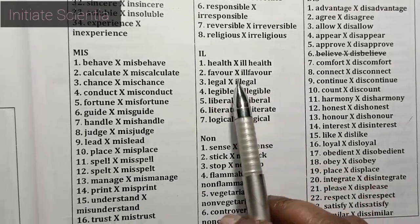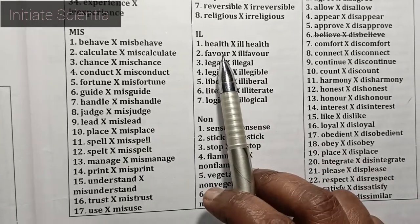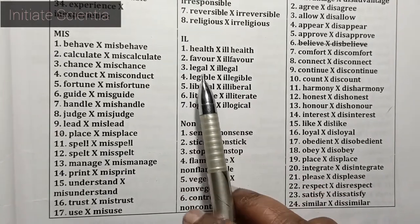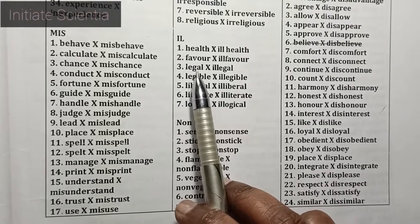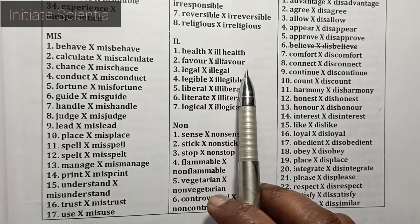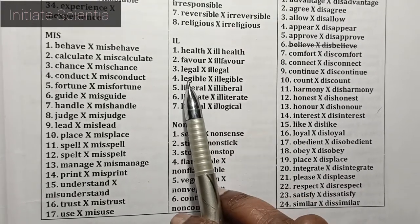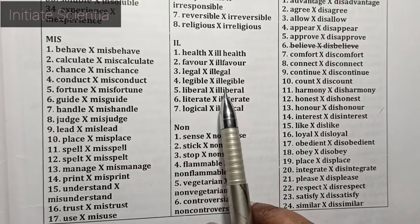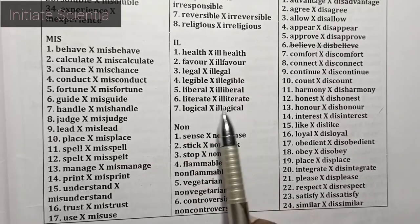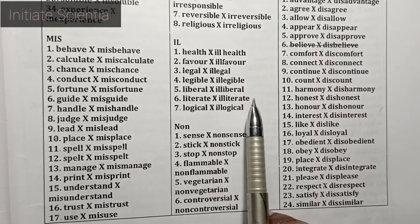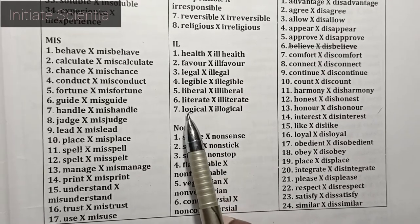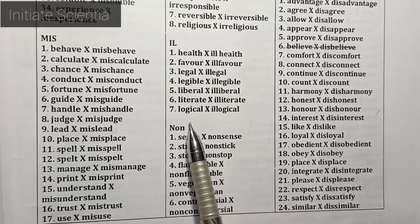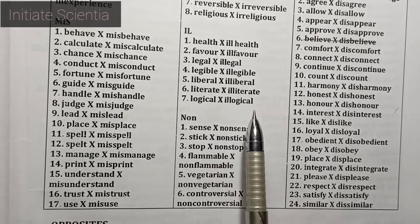Now words using the prefix ILL: health – ill-health, favor – ill-favor, legal – illegal, legible – illegible, liberal – illiberal, literate – illiterate, logical – illogical.